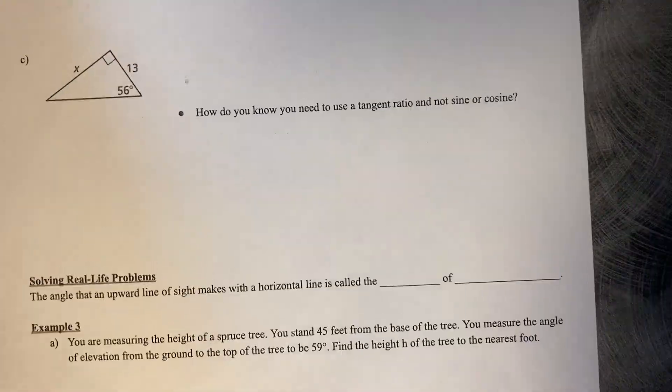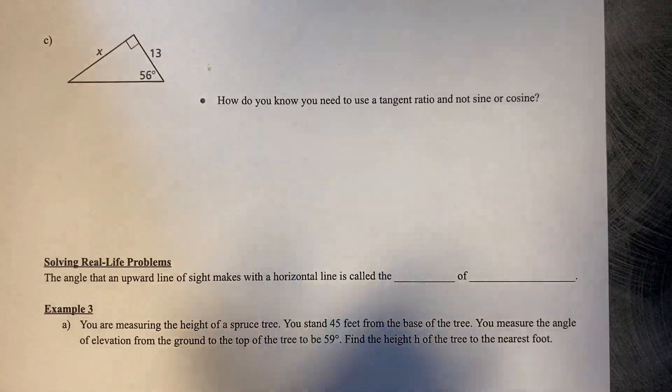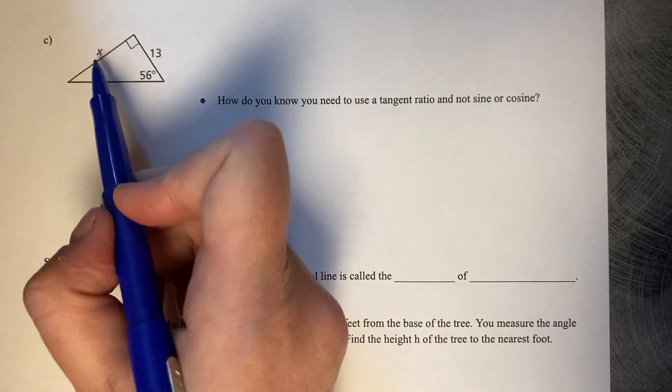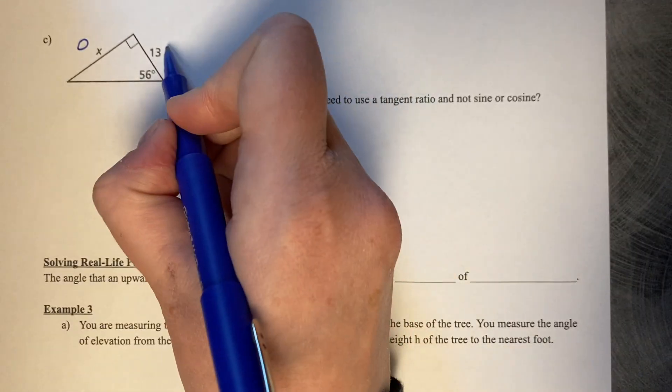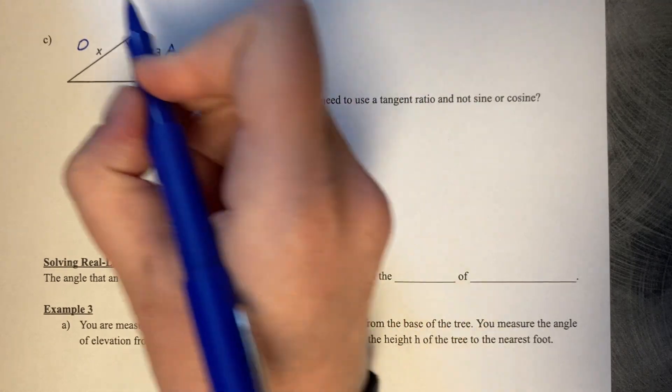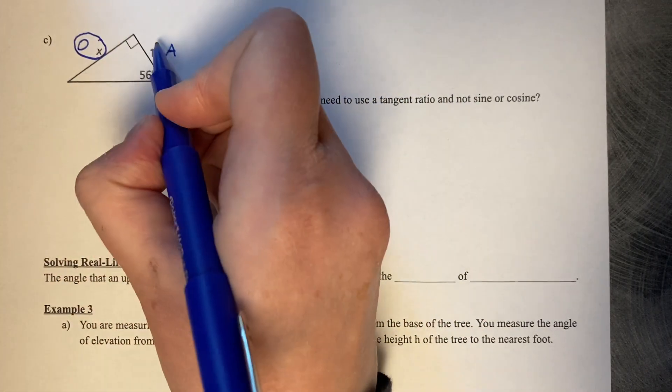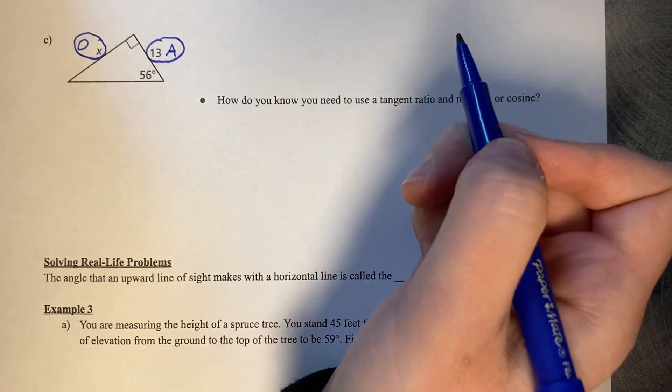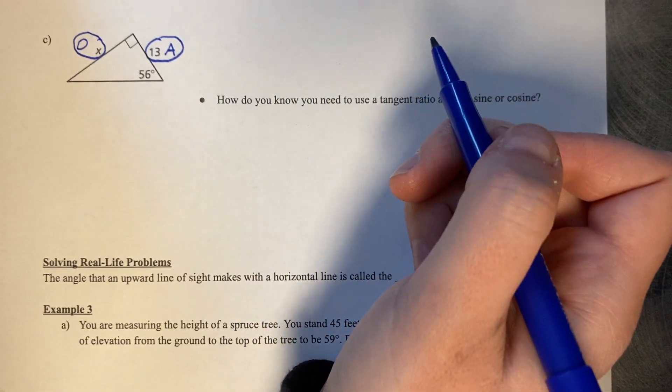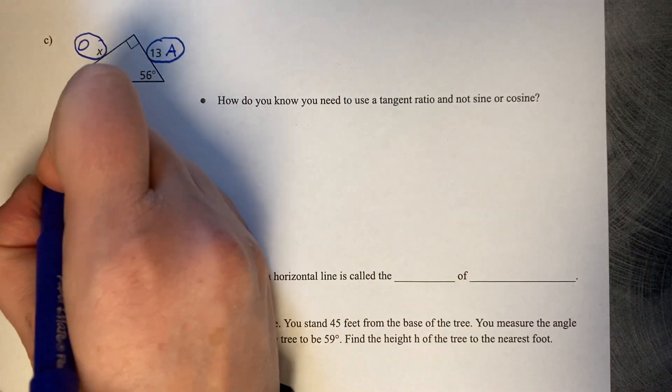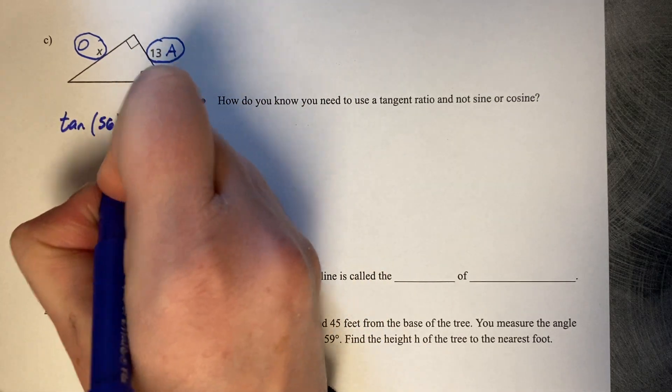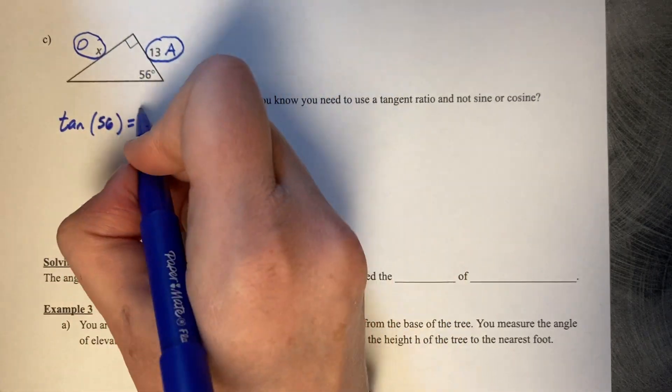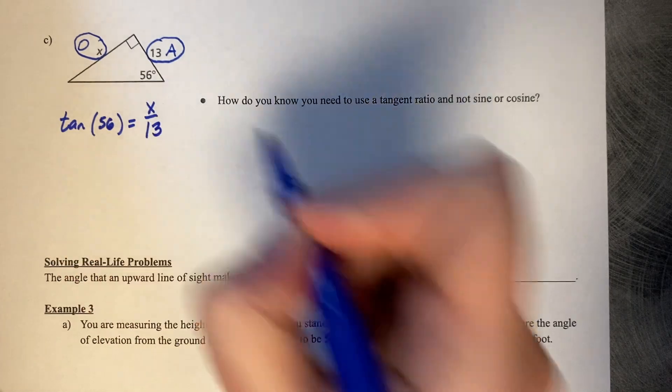Let's try one of a different flavor. Find the value of x. From 56, x is opposite, and 13 is my adjacent. So we're working with an O and an A, so we're still setting up a tangent ratio. The tangent of 56 equals x over 13.